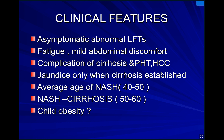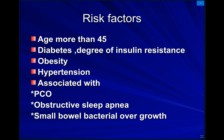Changes occur when cirrhosis is established. The average age of NASH is 40 to 50 years old, and NASH with cirrhosis is 50 to 60. Child obesity is a risk factor for adult obesity and is a risk for non-alcoholic fatty liver disease. Risk factors include age over 45, associated diabetes and insulin resistance, obesity, hypertension, polycystic ovary syndrome, obstructive sleep apnea, and small bowel bacterial overgrowth.